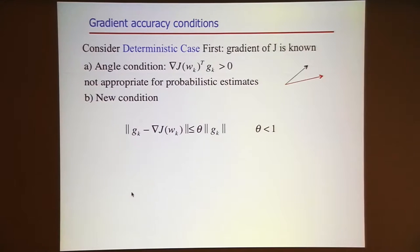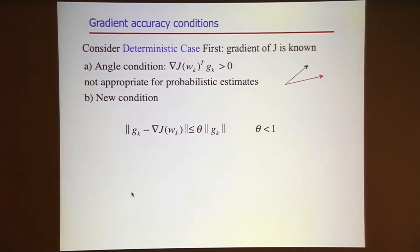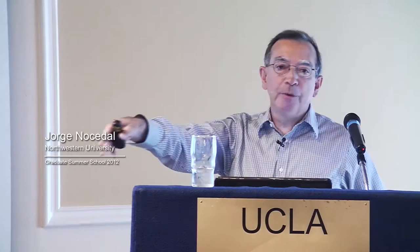I'm going to explain how we can dynamically increase sample sizes in a way that leads to convergence. I'm going to do it in two parts. First I'm going to assume that we know what the true gradient is. If I knew what the true gradient is, would I know how to steer my algorithm using a dynamic sample size?